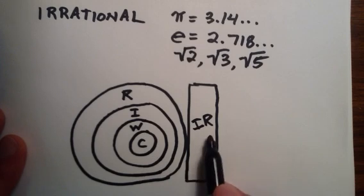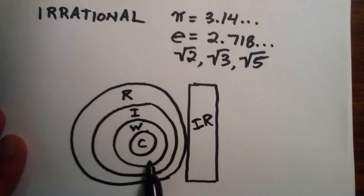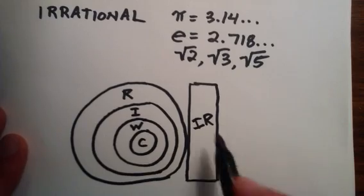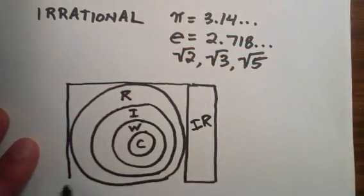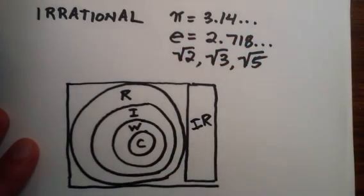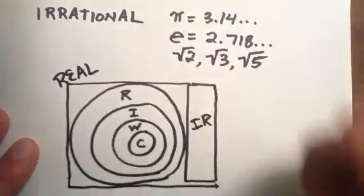The irrational numbers do not contain any of the numbers in the rational circle. However, the irrational and the rational numbers, and all of the things that the rational numbers contain, are connected in some sense. And that is, the group of all the irrational and rational numbers together are known as the real numbers.